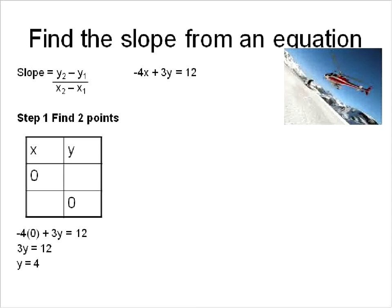I'll end up with 3y is equal to 12 and I can divide both sides by 3 to find that y is equal to 4. I can plug that information up in here and I know that my point is 0, 4.